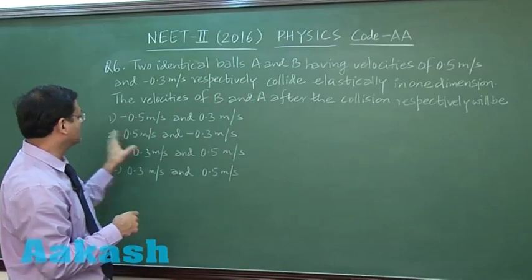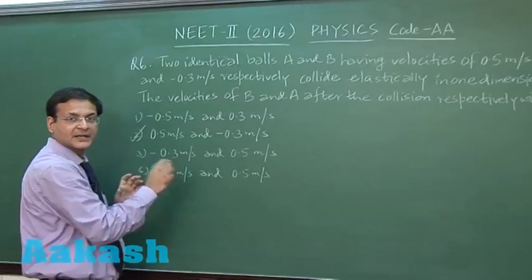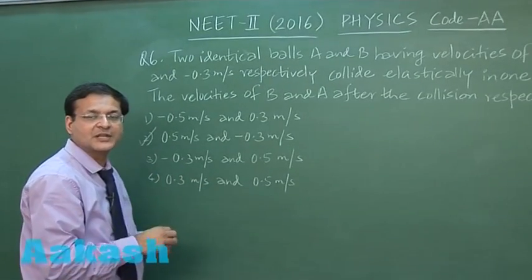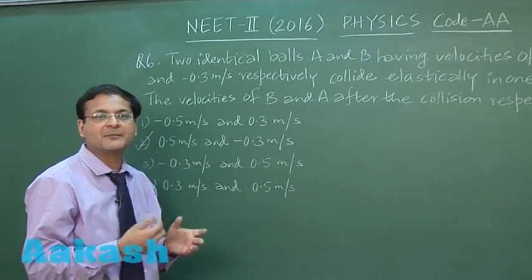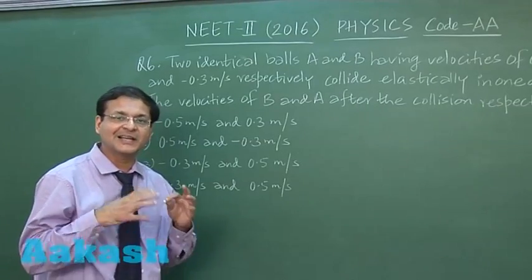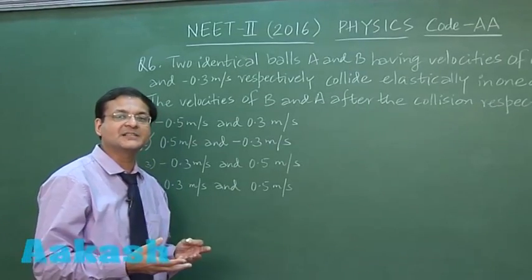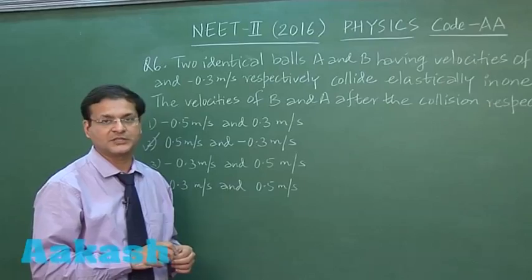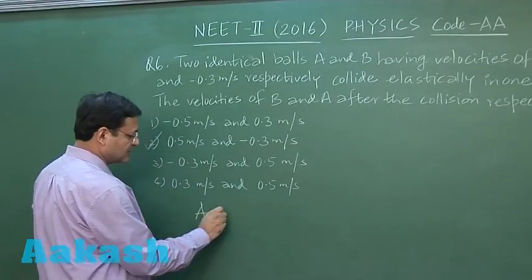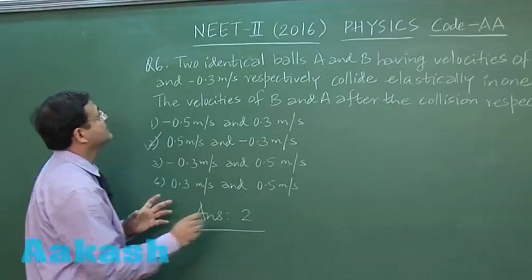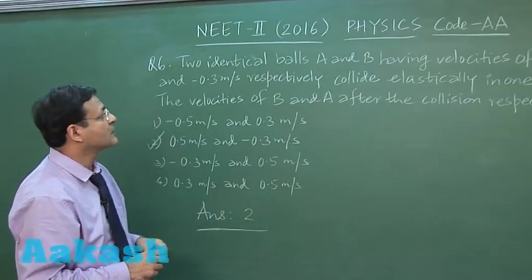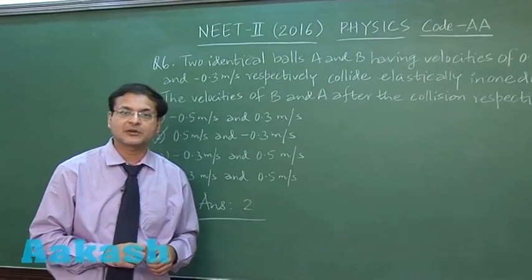So this is the second option you will be marking. Which result have I used? I have used the result that if the masses are identical, then in one-dimensional elastic collision their velocities are interchanged after collision. So answer 2 will be the correct option for this question number 6. I am marking it now. Let us switch over to the next question, that is question 7.